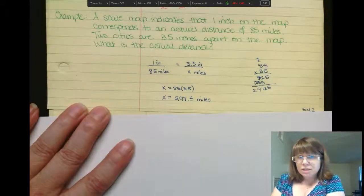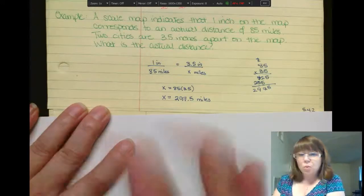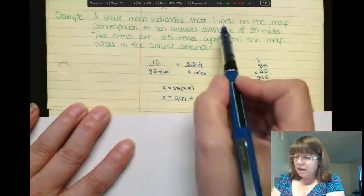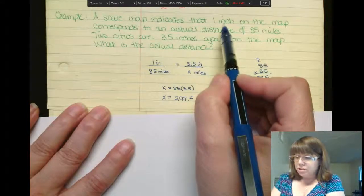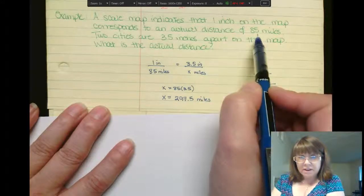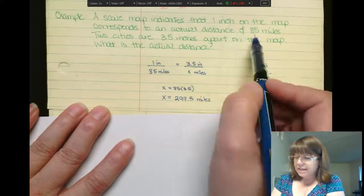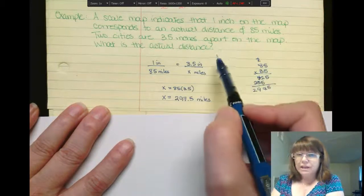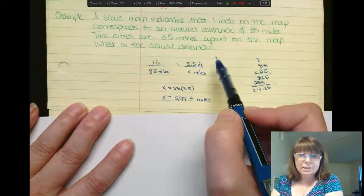The setup should be getting a little bit easier as to what do you pull in where. So again, I use my 1 inch to what it is. That's my first ratio. 1 to 85. And then I knew it's 3 inches, but to what? That's what I'm looking for. So that's going to be my x.